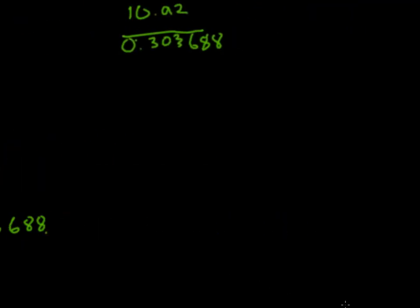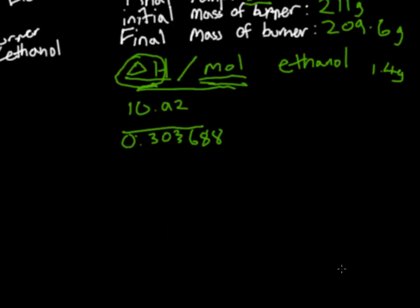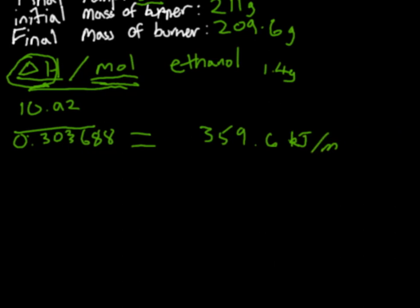Now we do one final division to get our answer. ΔH is 10.92 kJ and moles of ethanol is 0.030368. We divide 10.92 by 0.030368 and we get 359.6 kilojoules per mole of ethanol.